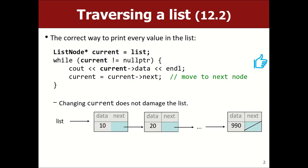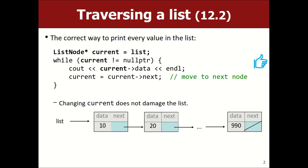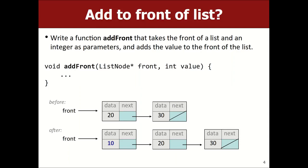What I want to talk about next is: what if we want to add an element to the front of the list? Before the call it stores 20 and 30; after the call it says 10, 20, 30. I don't want to loop and change data — instead I just want to make a new node and have the front be the new node. That's O(1) as opposed to looping over all nodes O(n).